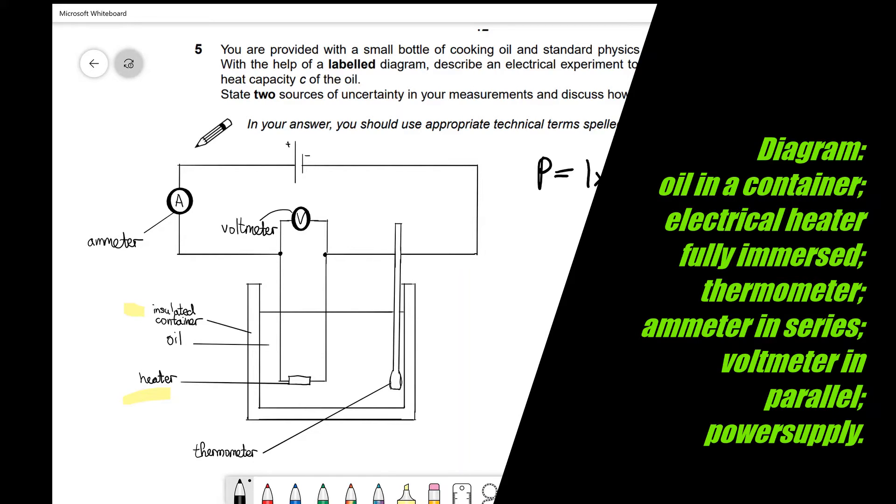We're going to be able to work out our input power. Just to recap the diagram: we've got a power supply up here that's connected to an ammeter, which is then connected to an electrical heater which is immersed into the liquid. The idea here is that the heater essentially heats up the liquid and we're going to be able to measure the temperature change. Once we know that temperature change, we should be able to work out the energy that's gone in and from there the specific heat capacity of the liquid.